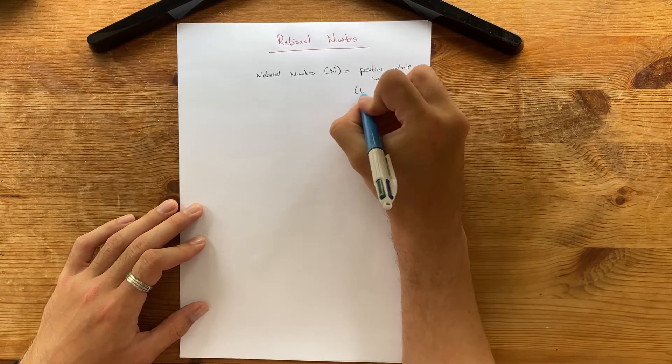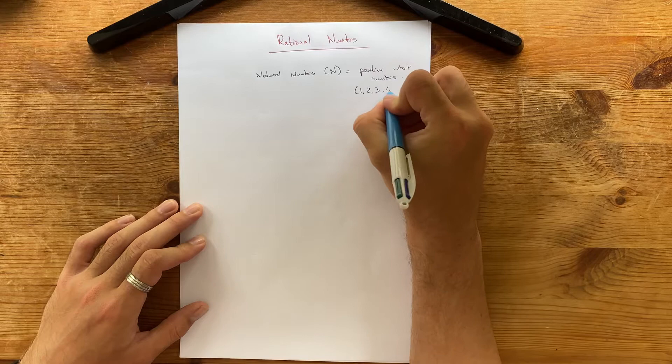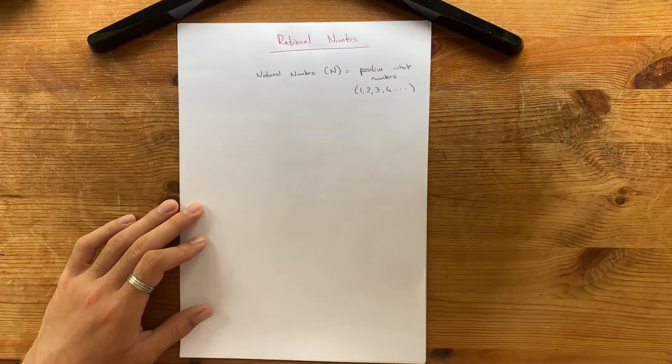For example, you've got 1, 2, 3, 4, and so on. That's pretty straightforward. We know what they are.